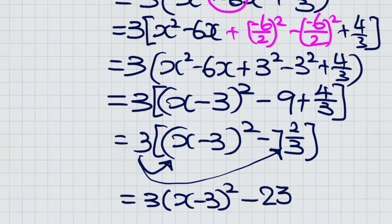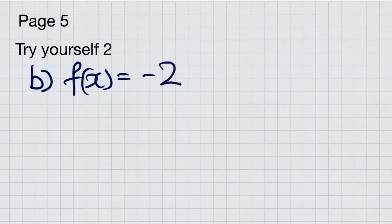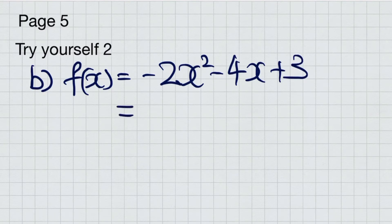Next, question B. Given that the function is -2x² - 4x + 3. First step: Take out -2 as a common factor.